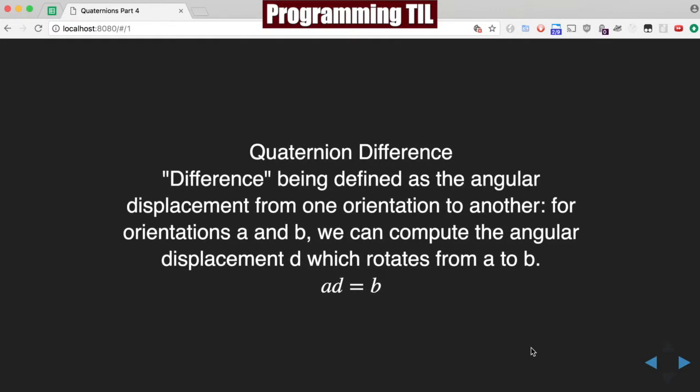So the difference is going to be defined as the angular displacement from one orientation to another. So if we have orientations a and b, we can compute the angular displacement d which rotates from a to b. So ad equals b.